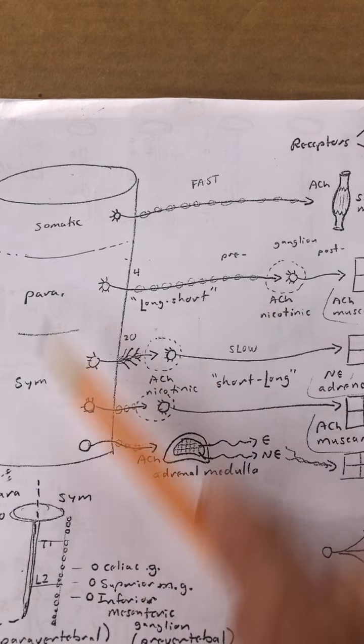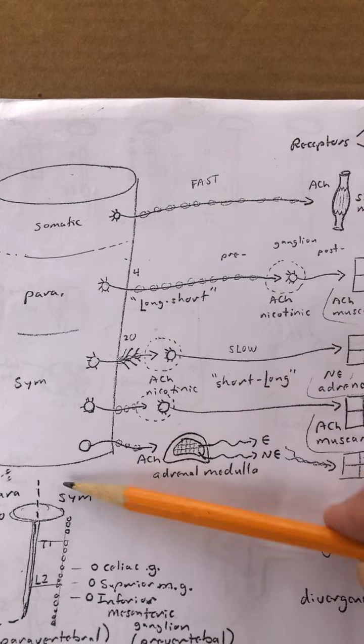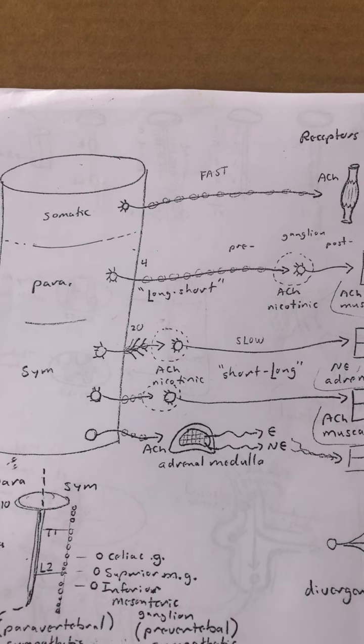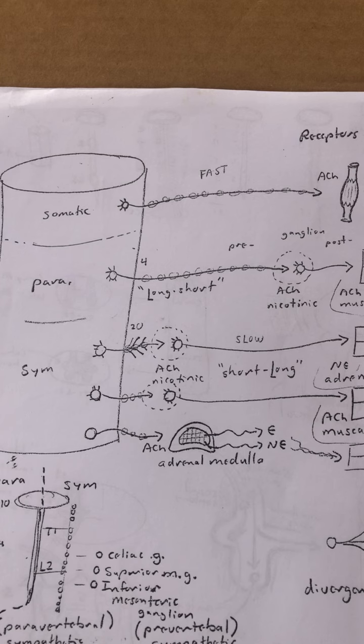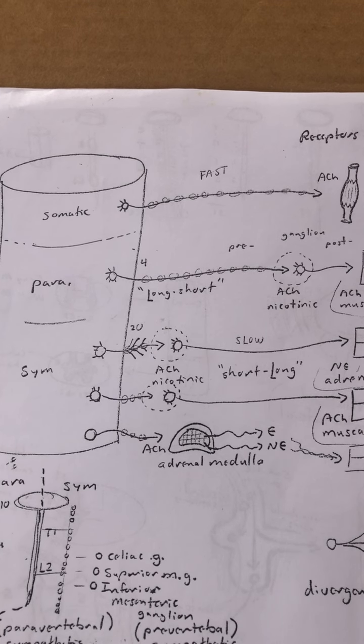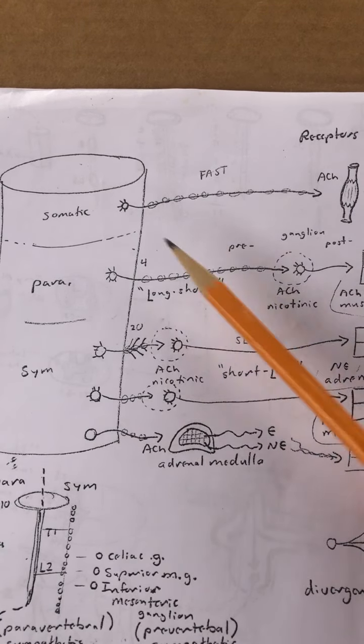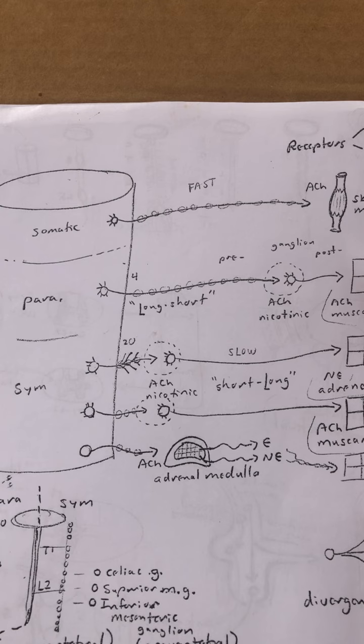Now to simplify things, we're going to talk about getting it from say the spinal cord over to the effectors. We're not going to worry about in this presentation getting it say from the premotor cortex to the motor cortex and down through the brainstem and all that kind of stuff. We're just going to take it from the spinal cord out to the effector and here we go.